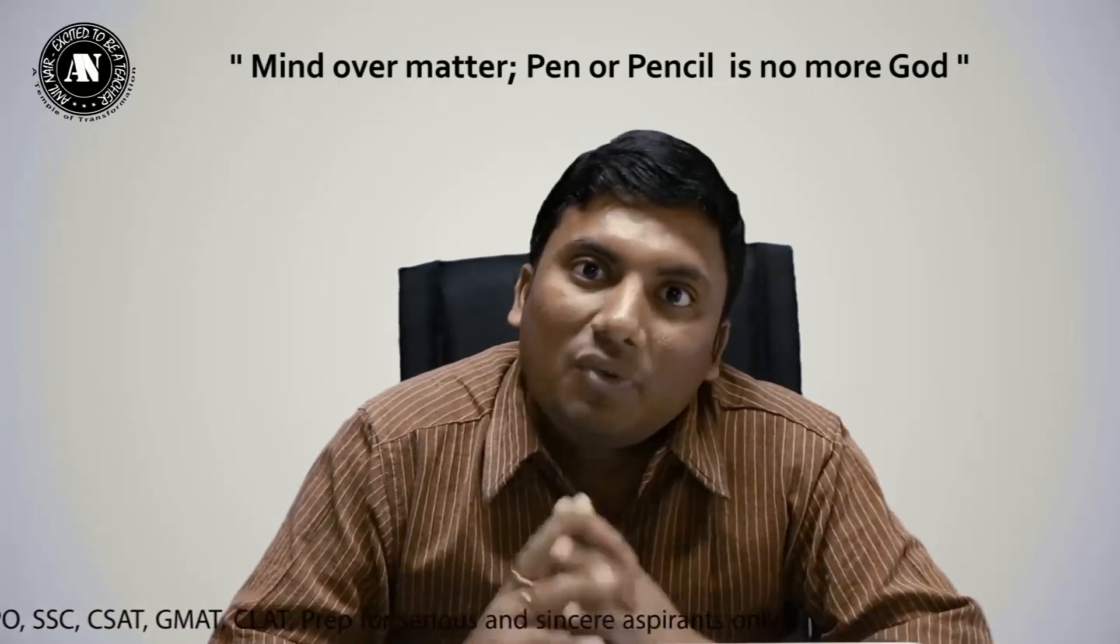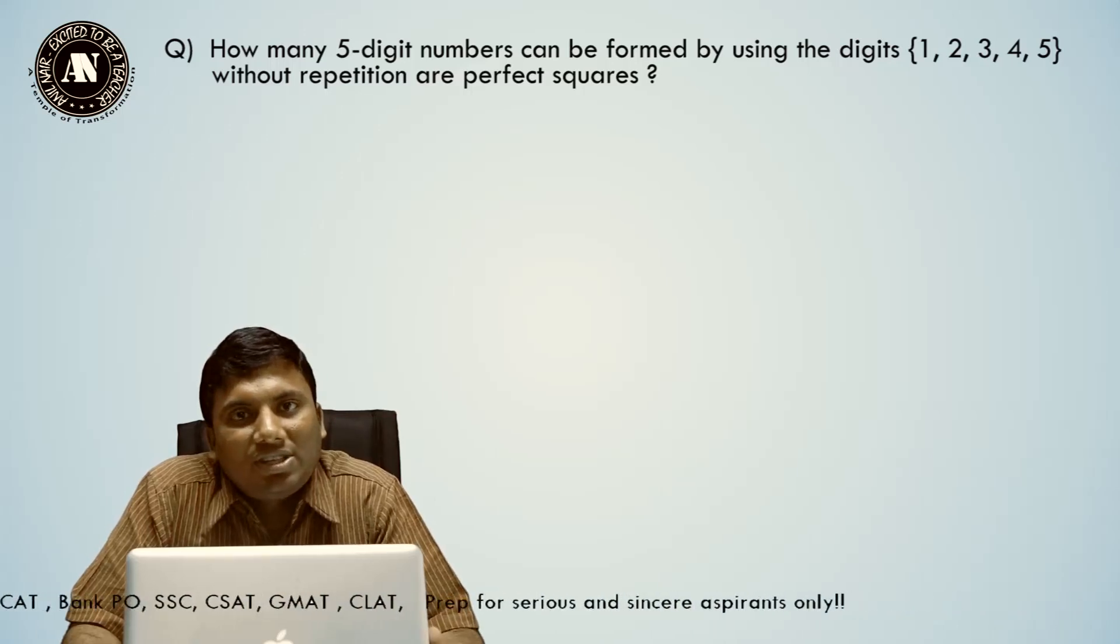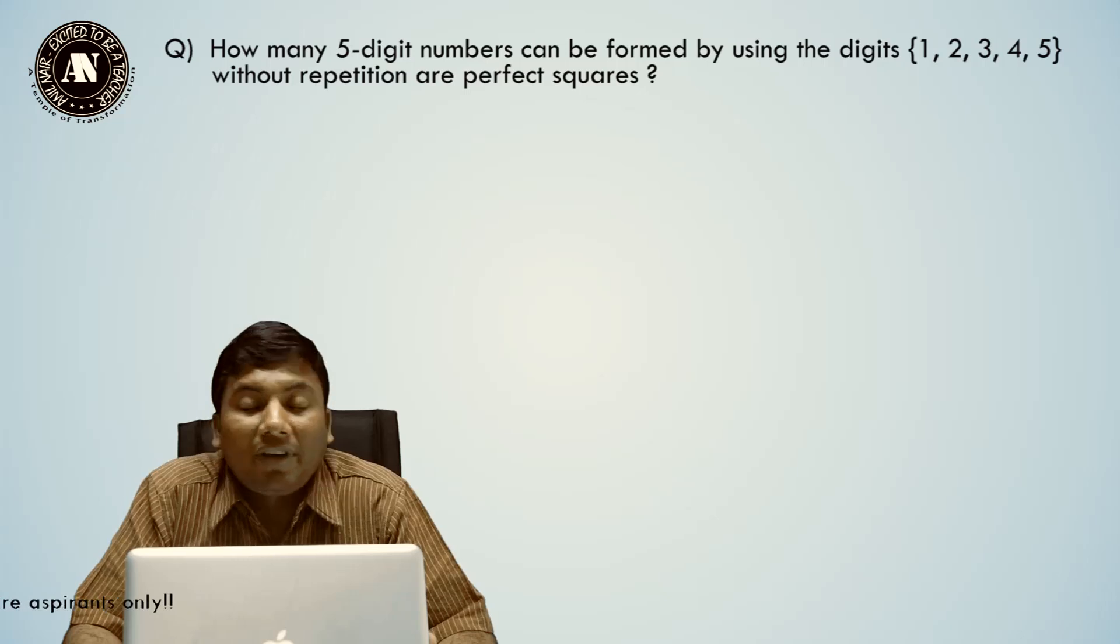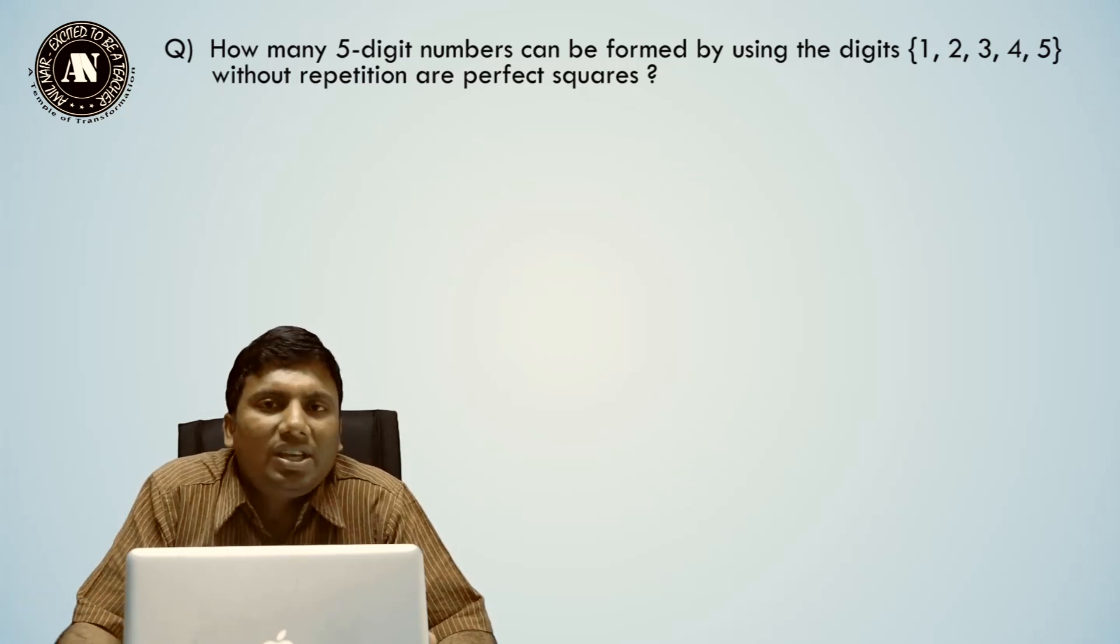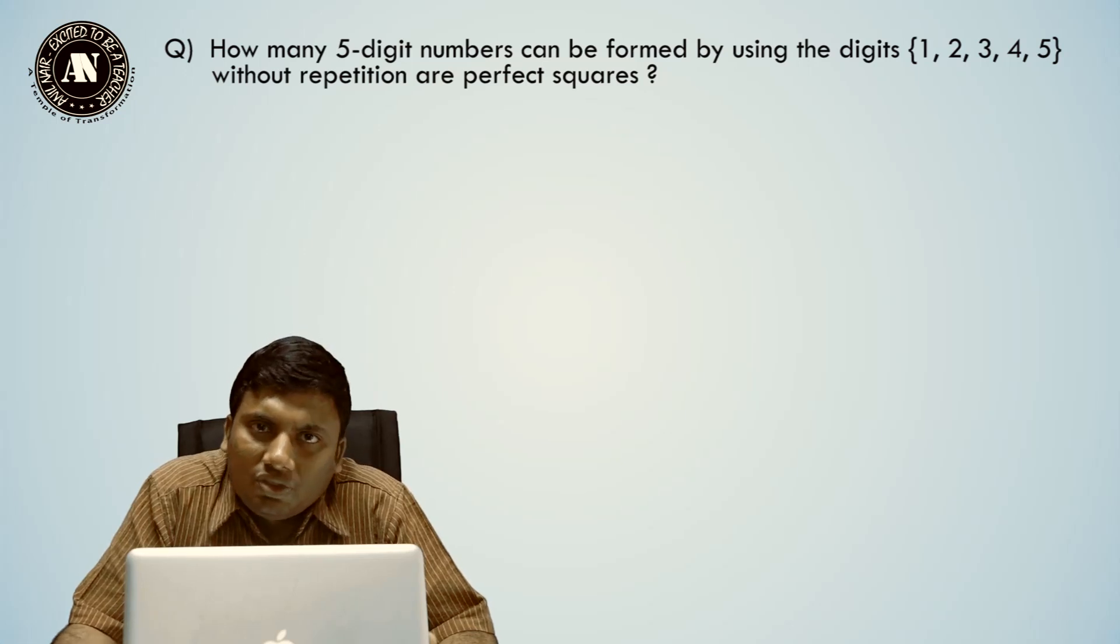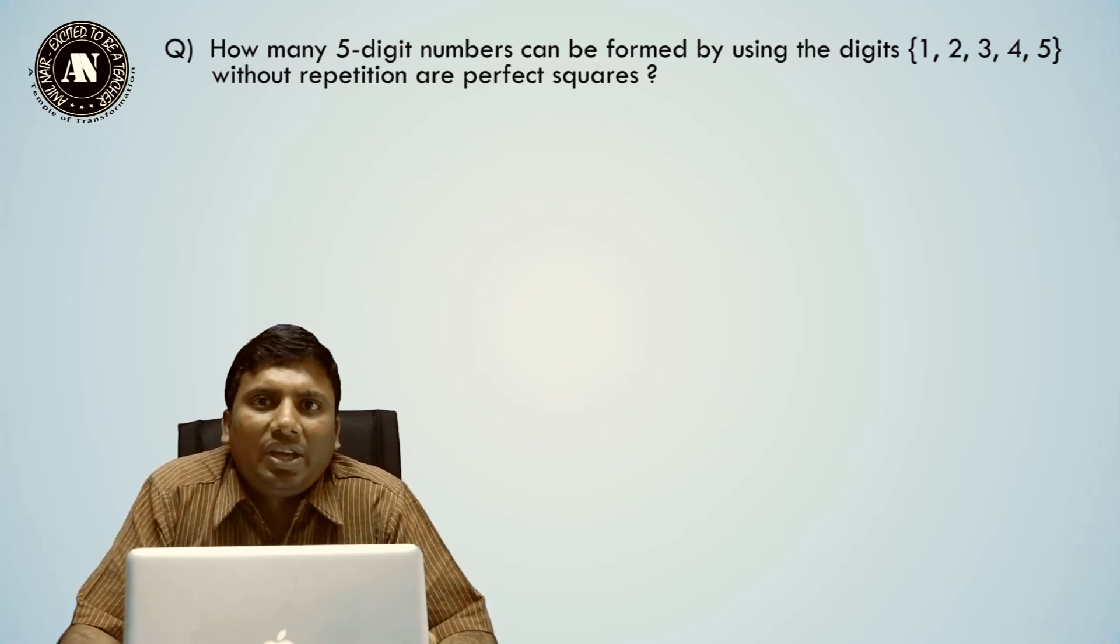Let us start with a question from permutation and combinations. How many five-digit numbers that can be formed by using the digits 1, 2, 3, 4, 5 without repetition are perfect squares? I have seen a lot of students keeping unit digit as 1 and 4 and trying out the enumeration. Kindly do not solve it that way.